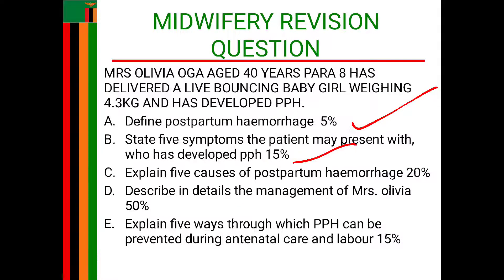Another symptom of PPH is hypotension, caused by excessive loss of blood in which the arterial blood pressure becomes more reduced. Apart from that, you may also see anemia, caused by excessive loss of hemoglobin as the woman bleeds vaginally. Tachycardia may also be seen due to low blood volume — it comes as a compensatory mechanism by the heart as it tries to pump fast to supply blood adequately to all parts of the body. Other symptoms include fatigue due to severe anemia, as well as restlessness due to cerebral hypoxia.